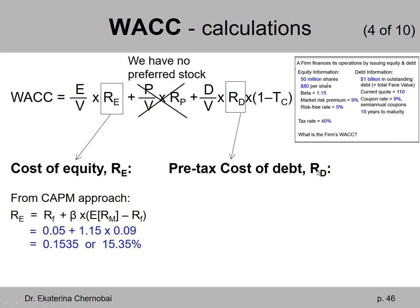Next, the pre-tax cost of debt, RD. This is the same as computing I/Y in a bond problem. To compute I/Y we need N (number of coupons), PMT (the coupon amount), FV (face value of the bond), and PV (the bond price).